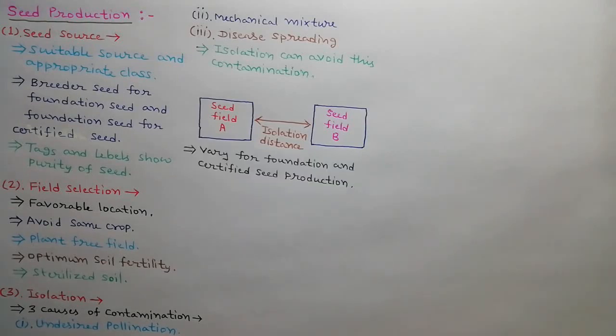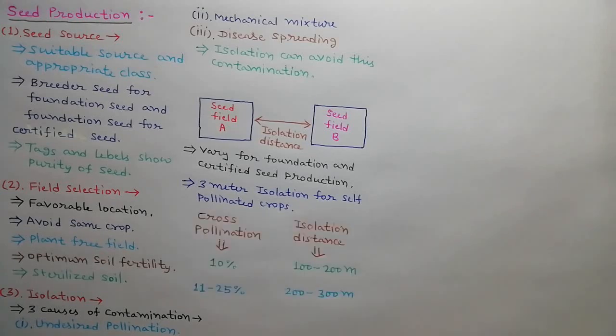Isolation distance may vary for foundation seed production and certified seed production for each seed crop. 3 meter isolation distance is required in all self pollinated crops. As the percentage of cross pollination increases, value of isolation distance also increases. As shown in the table, for 10% cross pollination, 100 to 200 meter isolation distance is required. And for 11 to 25% cross pollination, 200 to 300 meter isolation distance is required.